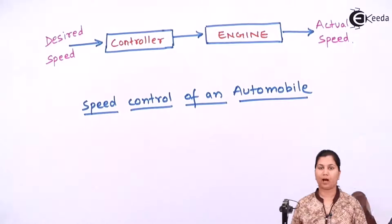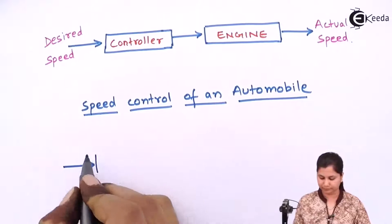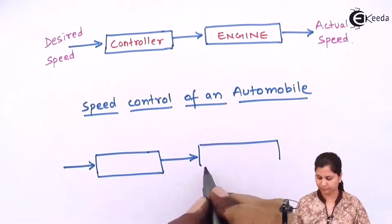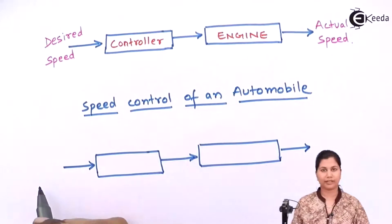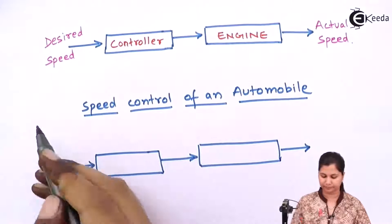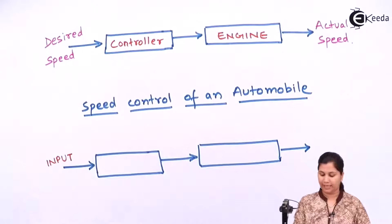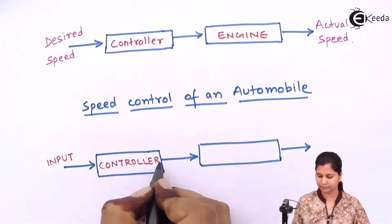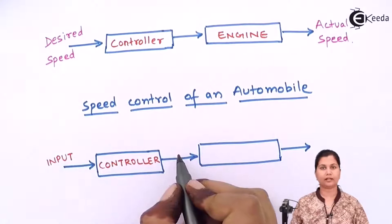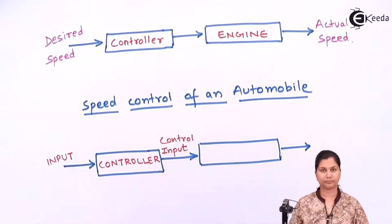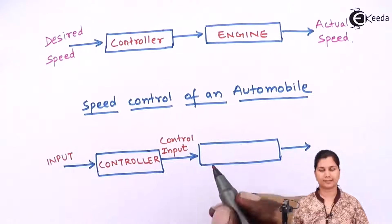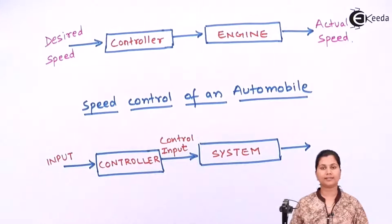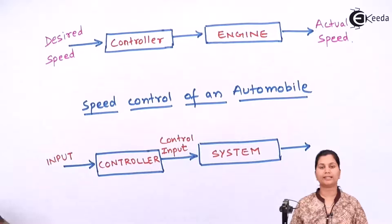Let's compare it with our example. This is our input, this is our controller, and the output of the controller is the control input. This control input is given to the system, and on this system there may be some disturbances acting on it. If the disturbances are produced inside the system they are called internal disturbances, and there might be disturbances due to the external environment, which are known as external disturbances.